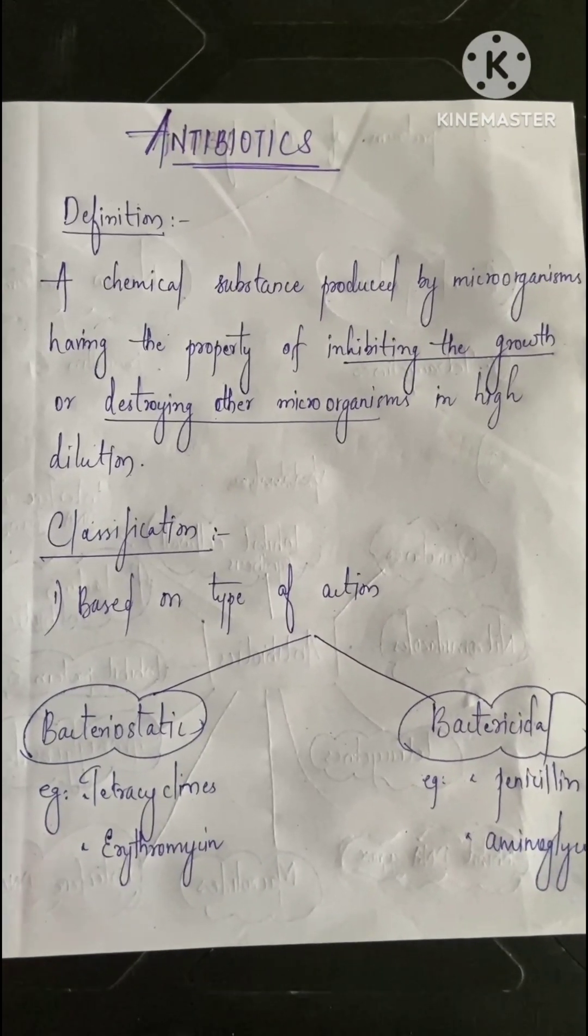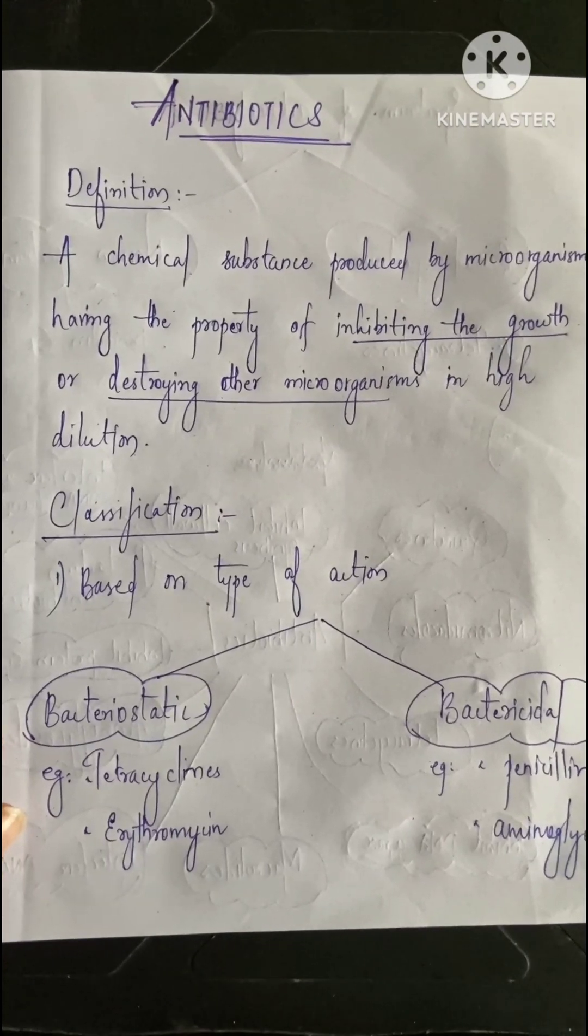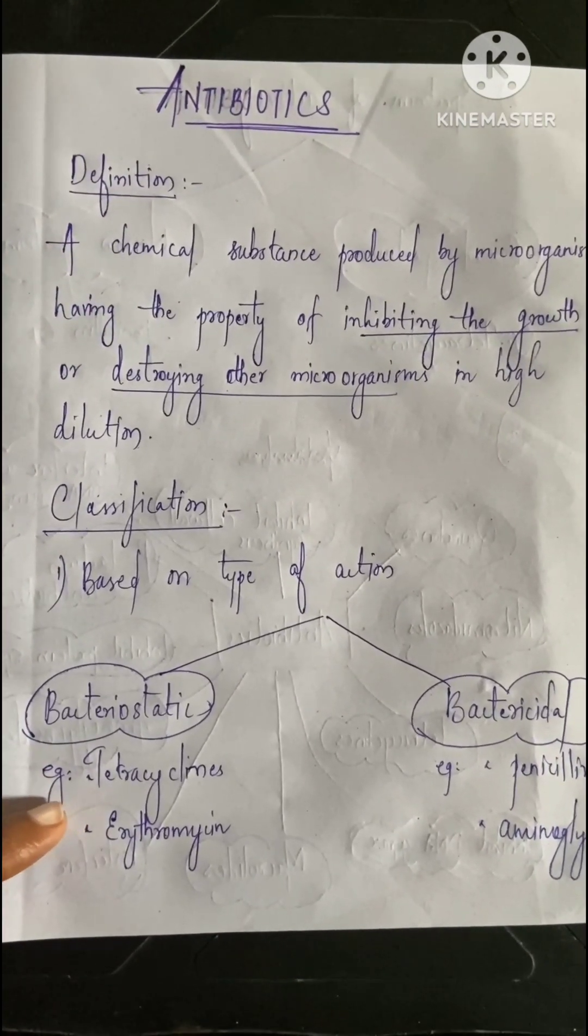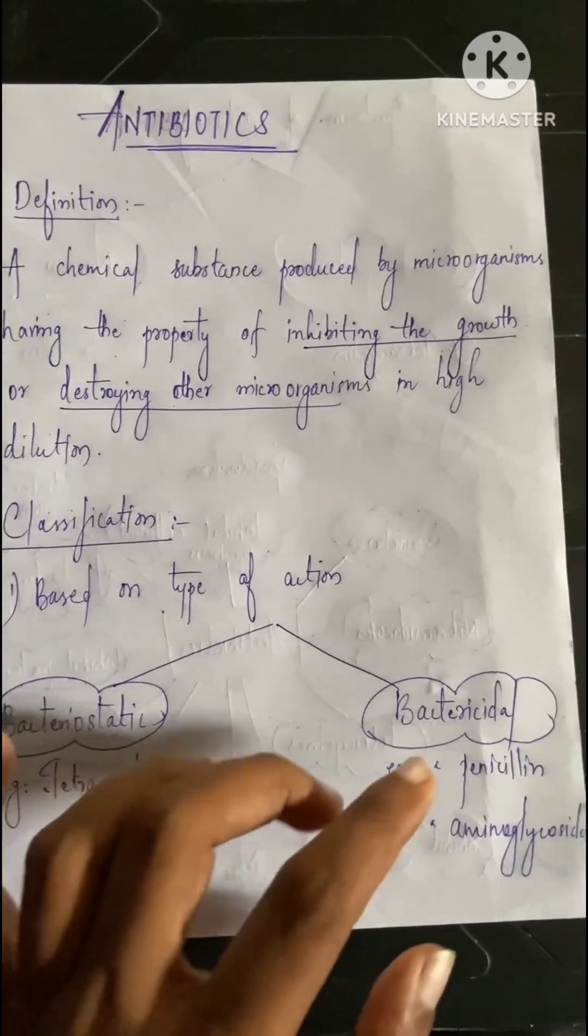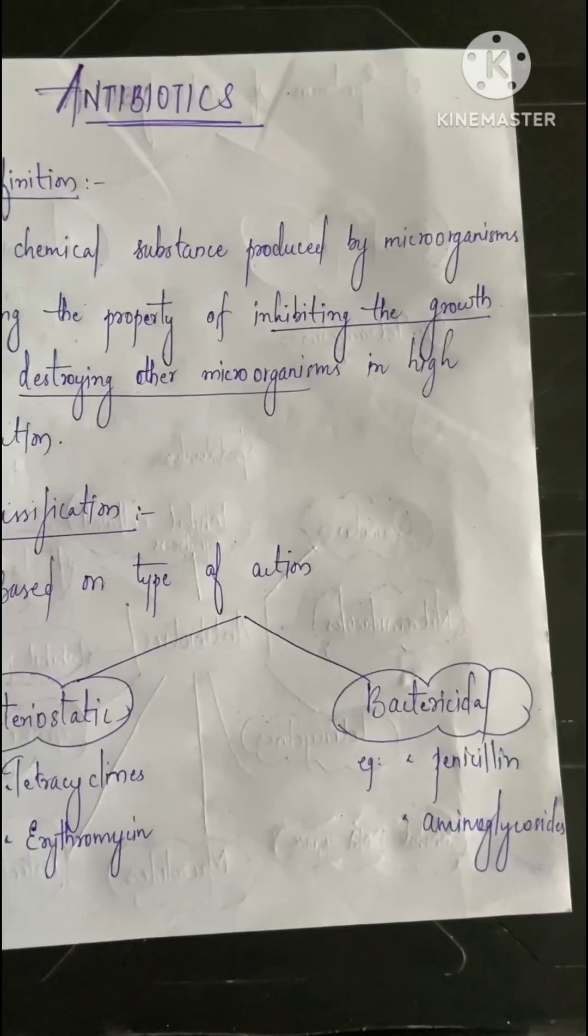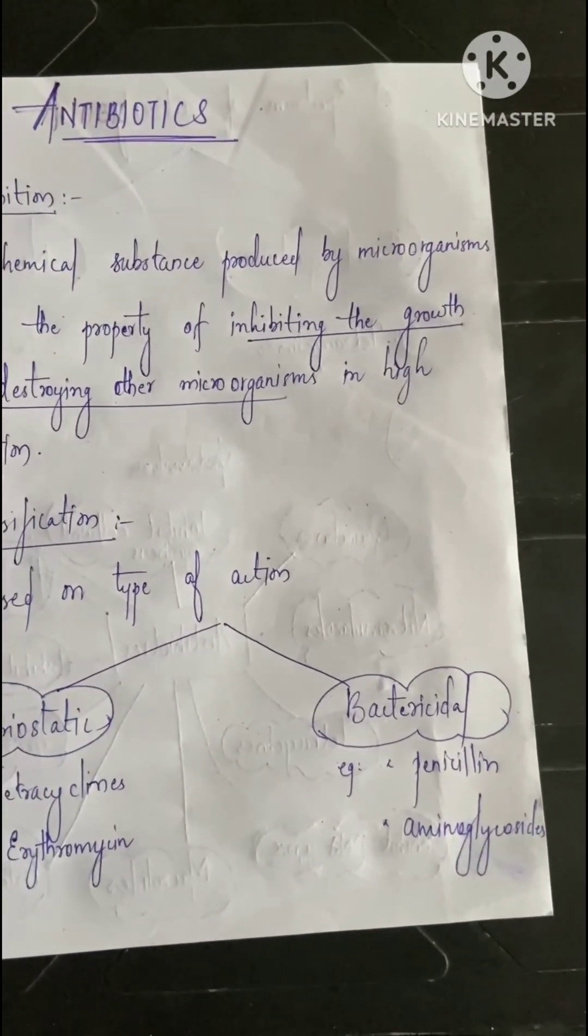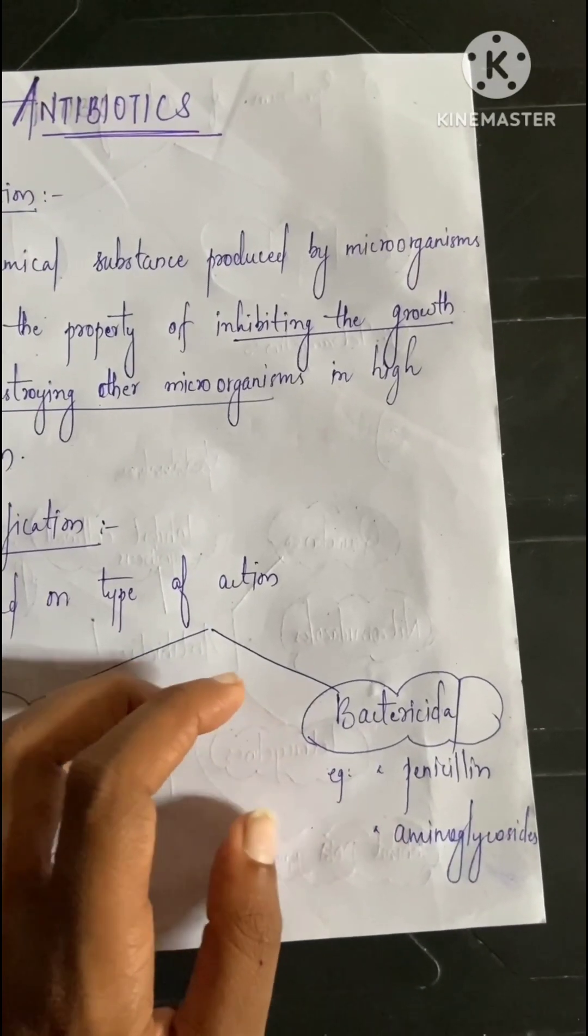Bacteriostatic means static - to stop. In this, the microbial growth is stopped by the antibiotic. Examples of bacteriostatics are tetracyclines and erythromycin. Next is bacteriocidal - bacteriocidal action means it is completely killing the bacteria or microbes that enter the body.